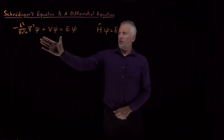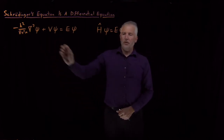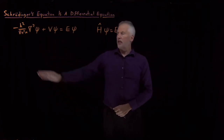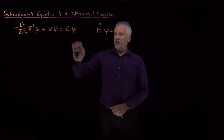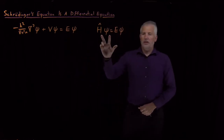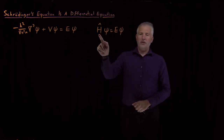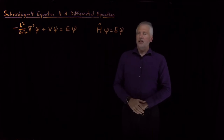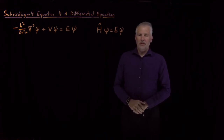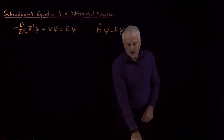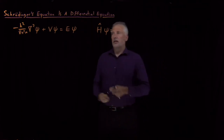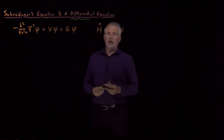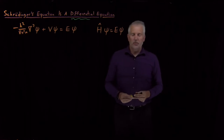Now we understand a little bit about Schrödinger's equation, whether we write it down somewhat explicitly like this, or in this extremely compact notation using operator notation. It's important to recognize what type of equation this is, namely that it's a differential equation, not an algebraic equation.